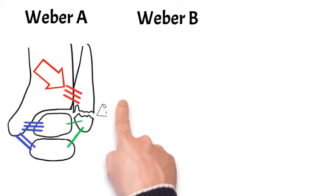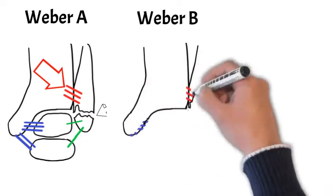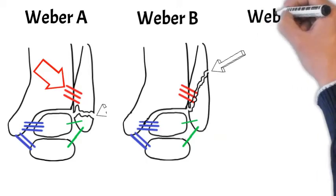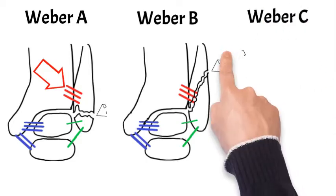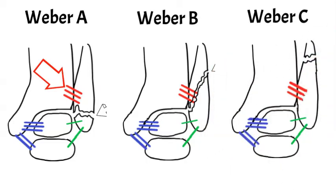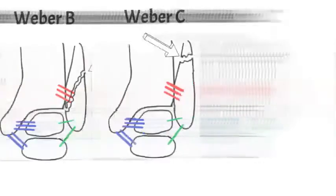Weber B occurs at the level of the syndesmosis, so at a different level to Weber A on the left. The reason this classification is important is that it determines whether you might need surgery. Weber C occurs above the level of the red lines — above the level of the syndesmosis. We're going to go into each of these types of fibular fracture in more detail now.